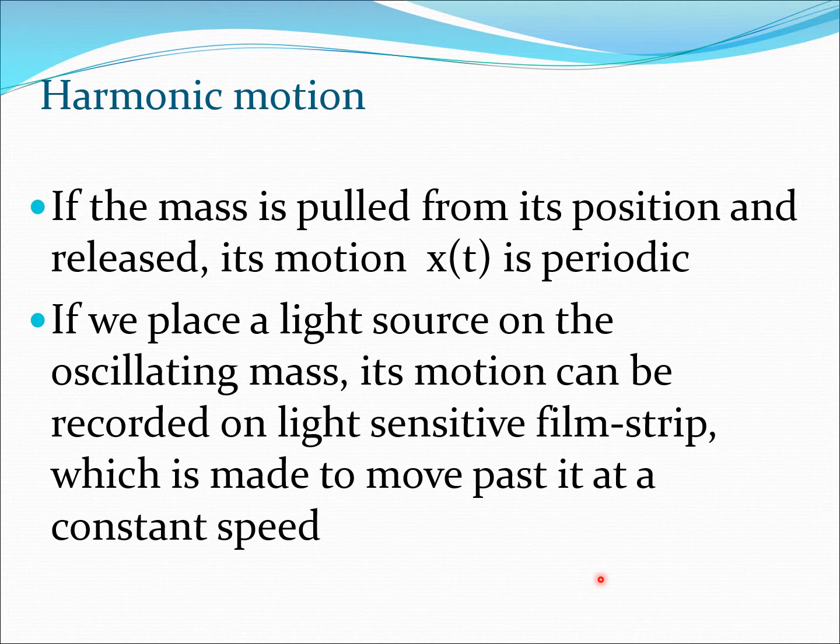So we see that if the mass is pulled from its position and released, the motion x(t) is going to be periodic. Now how can we get this particular profile? One way would be that if we place a light source on this mass, its motion could be recorded on a light-sensitive film strip which is made to move past it at a constant speed. And this is one of the ways we can perform an experiment to get the typical harmonic motion.